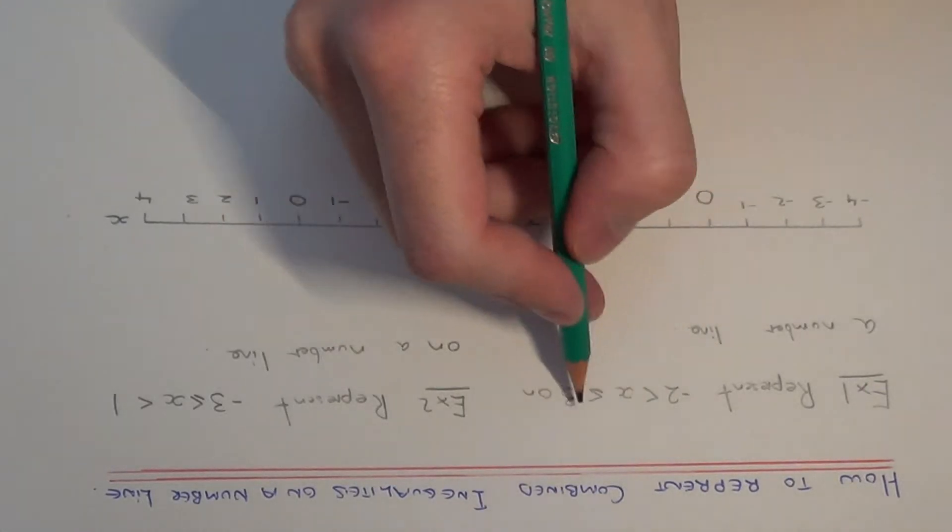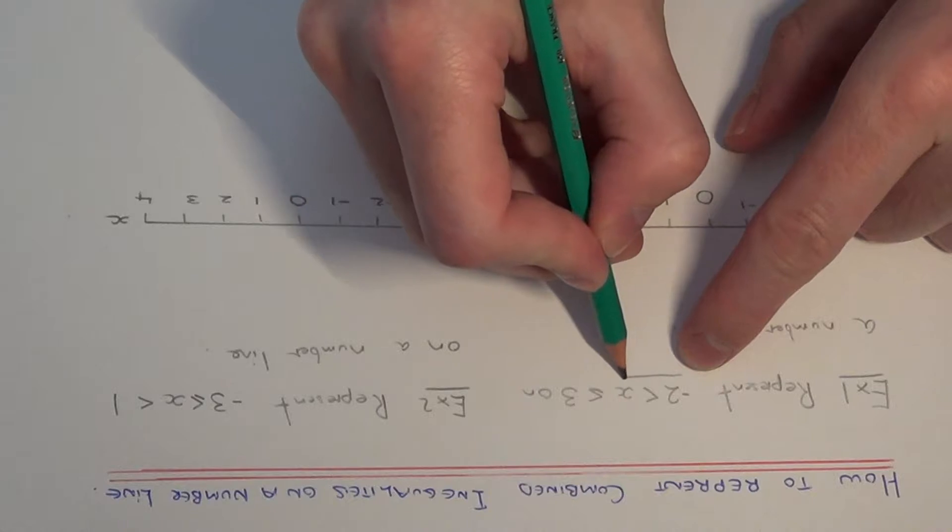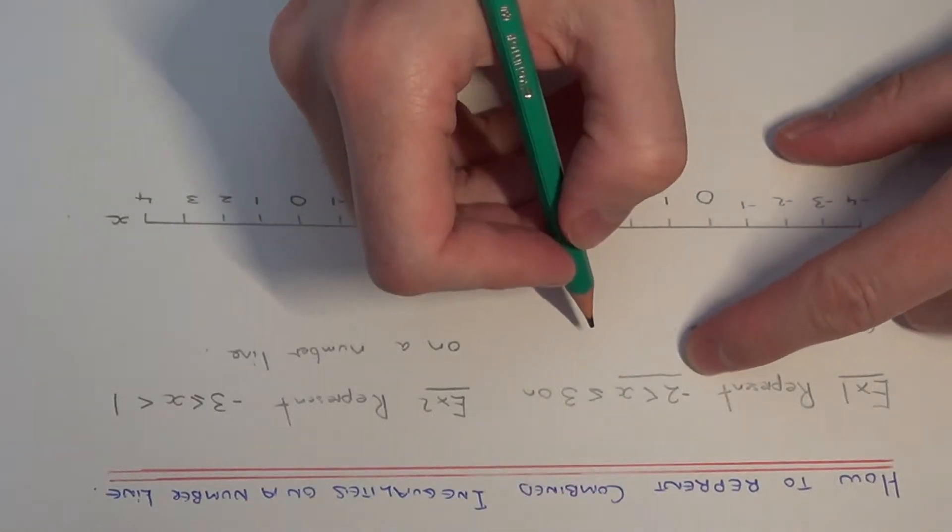First of all we need to understand what this actually means. The first bit is minus 2 is less than x.